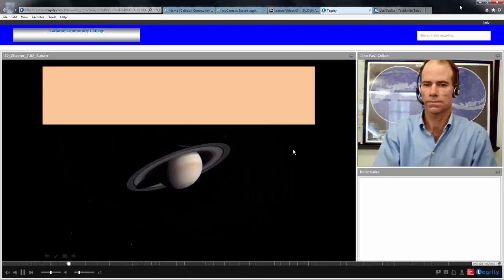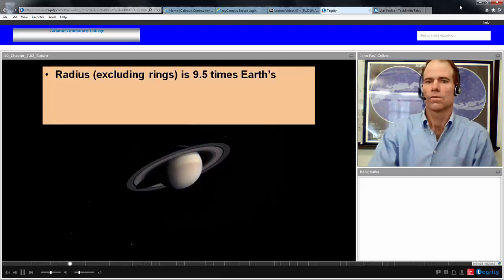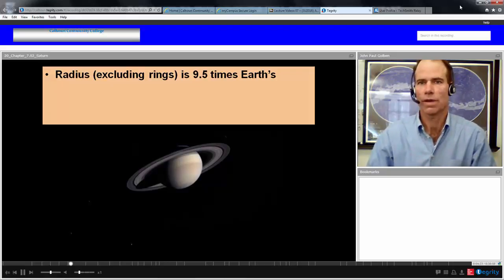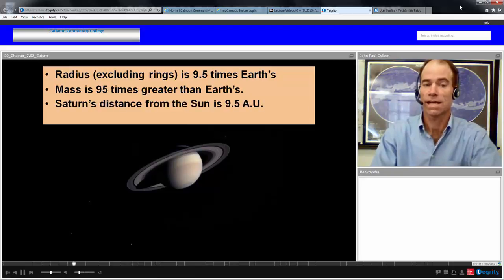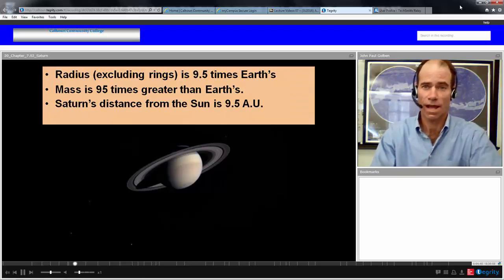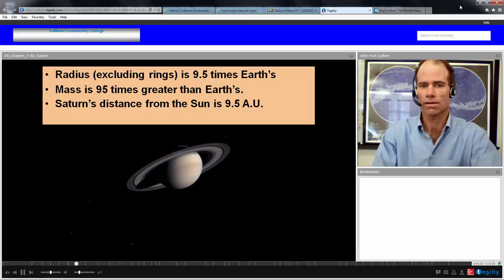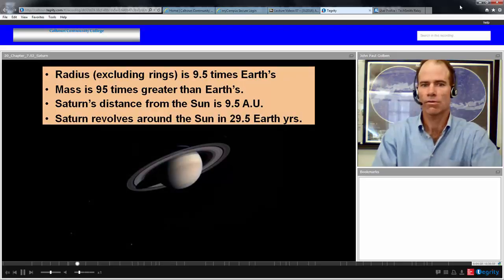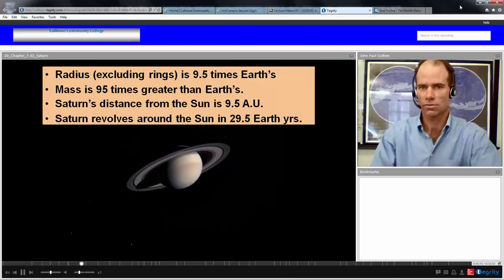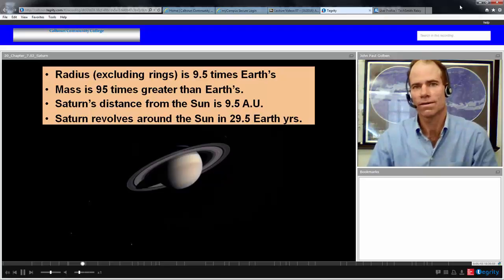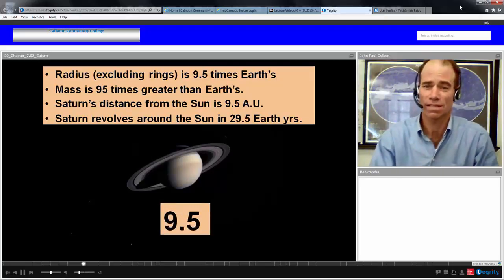Radius of Saturn is 9.5 times the radius of Earth. The mass is 95 times greater than Earth's. Saturn's distance from the Sun is 9.5 astronomical units, 9.5 times greater than our distance. Saturn revolves around the Sun in 29.5 Earth years. These are all easy numbers to remember: radius 9.5 times, mass 95 times, distance 9.5 AU, time around the Sun 29.5 Earth years. If we were to rate Saturn on a scale of 1 to 10, it probably would come out as a 9.5.